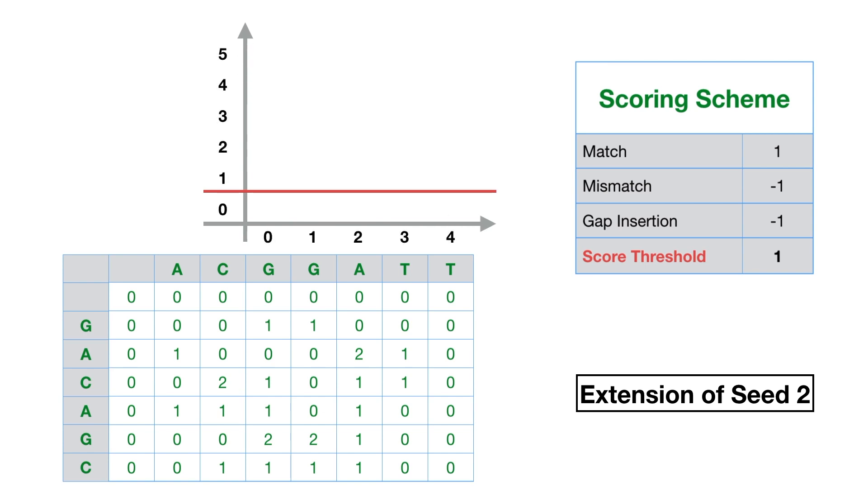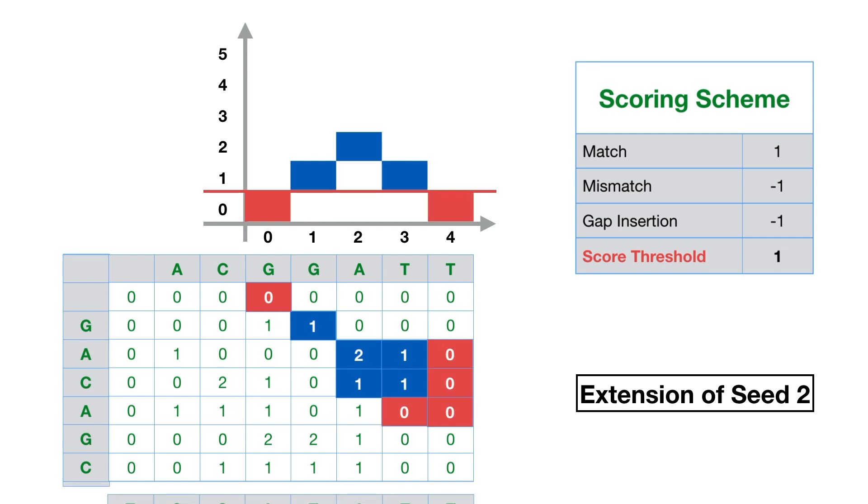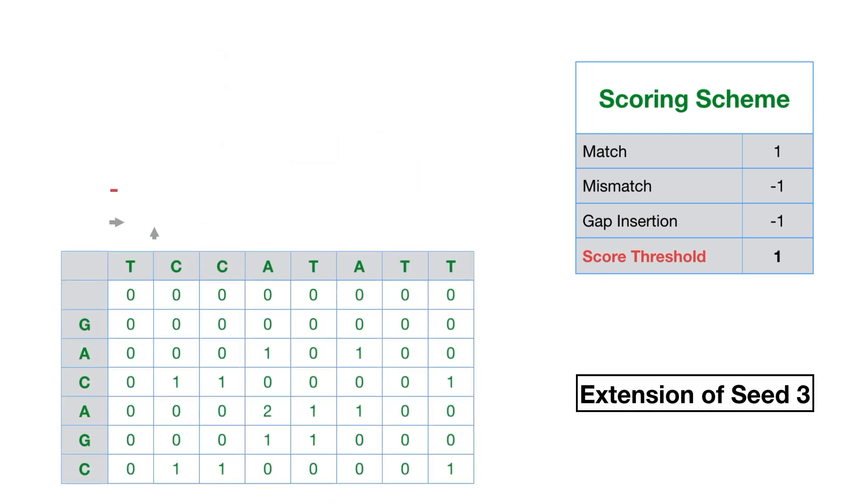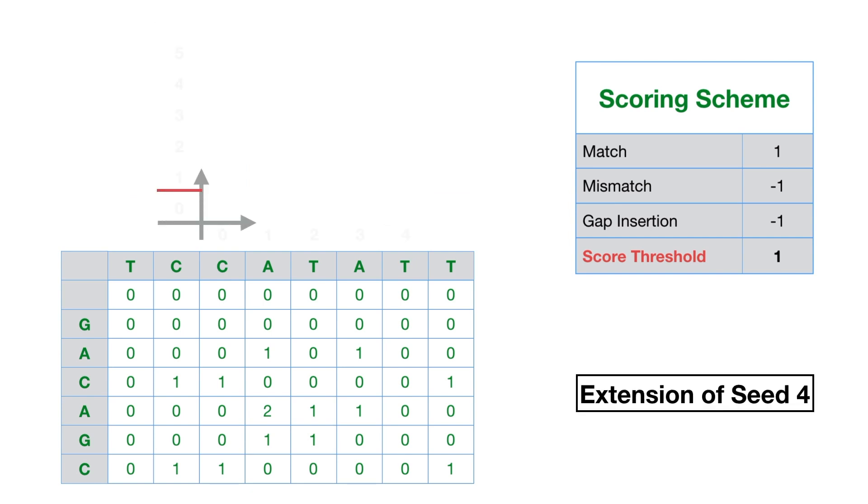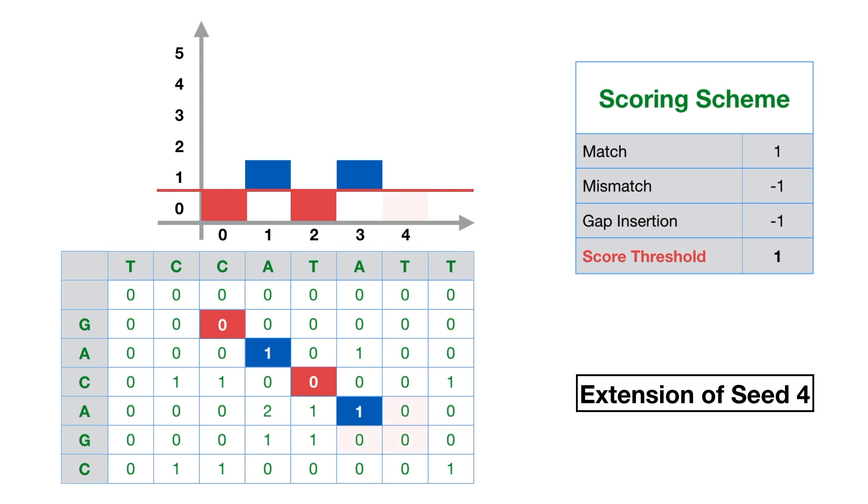This is the extension of the second seed. By repeating the method, we get this extension. Regarding the third seed, we get this extension. In the case of the fourth seed, we can see that there isn't any extension.